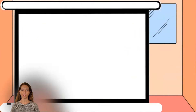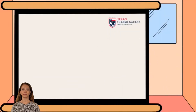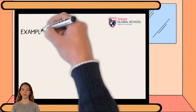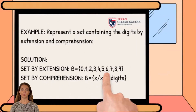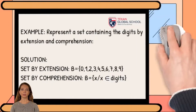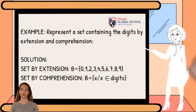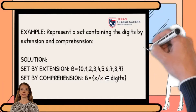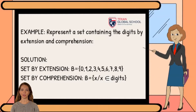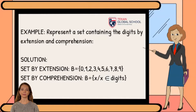Let's look at another example: Express the set that represents the digits by extension and comprehension. As we know, the set by extension is one that contains all the elements. Therefore, the set B contains the elements 0, 1, 2, 3, 4, 5, 6, 7, 8, 9.